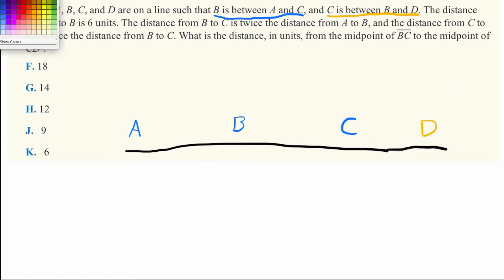It says the next one, the distance between A and B is six units. So they're talking about this distance right here, from A to B, and that distance is six units. Easy.